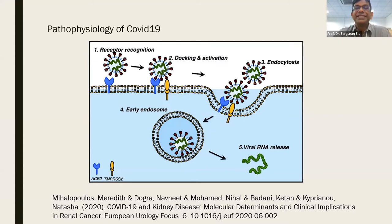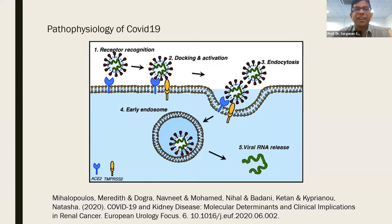The cytoplasm is not a friendly environment to any virus. Lysosomes are ready to break these things apart, but there is actually an endosome designed to protect the virus, until the viral RNA is released to go on and do its damage.